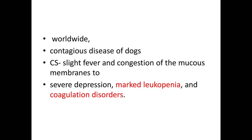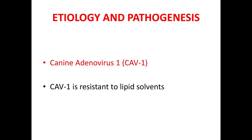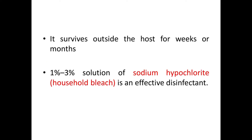Now let's see the etiology and pathogenesis of infectious canine hepatitis. Canine adenovirus 1 (CAV1) is the causative agent of ICH, and it is antigenically related to CAV2, which is one of the causes of infectious canine tracheobronchitis. CAV1 is resistant to lipid solvents such as ether, as well as to acids and formalin, and it survives outside the host for weeks or months. A 1 to 3% solution of sodium hypochlorite or household bleach is an effective disinfectant for CAV1.